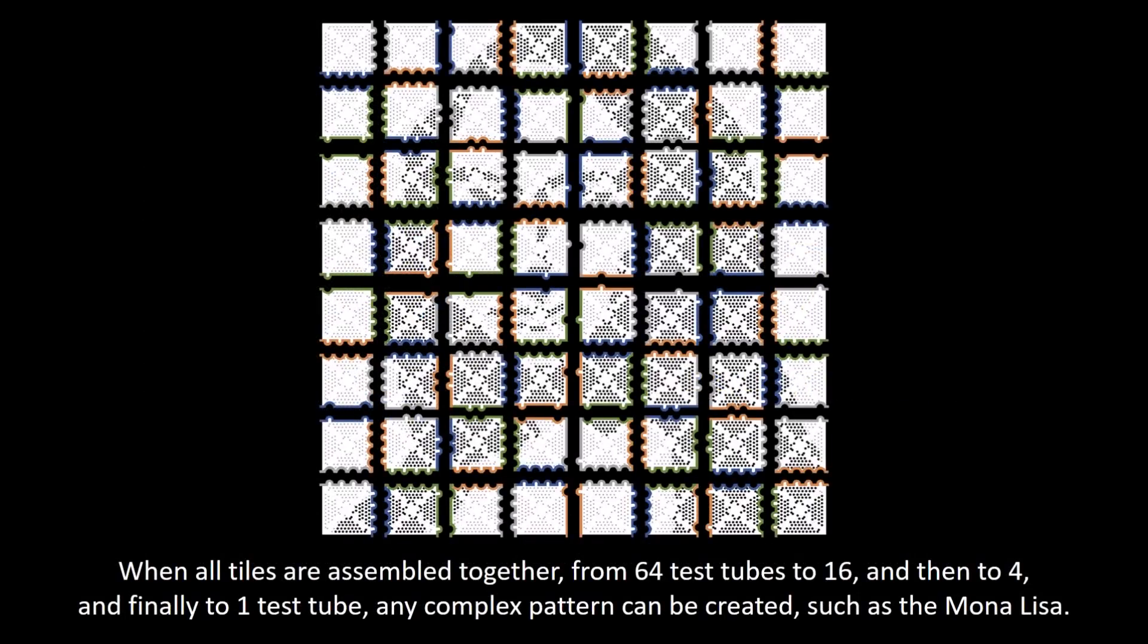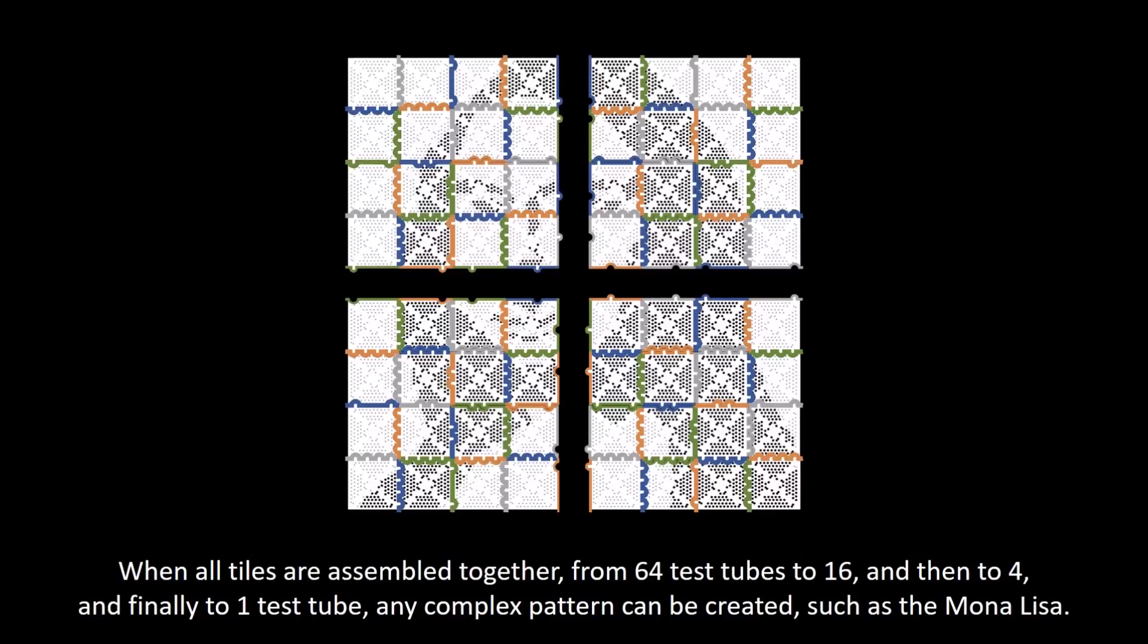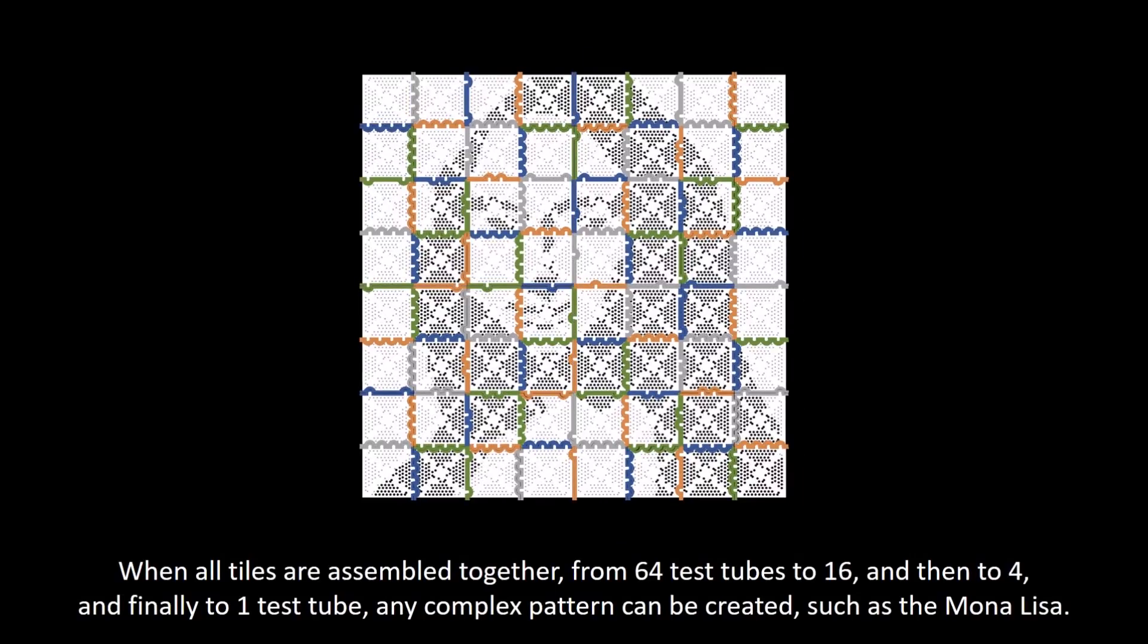When all tiles are assembled together, from 64 test tubes to 16, and then to 4, and finally to one test tube, any complex pattern can be created, such as the Mona Lisa.